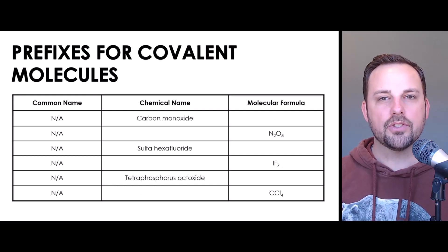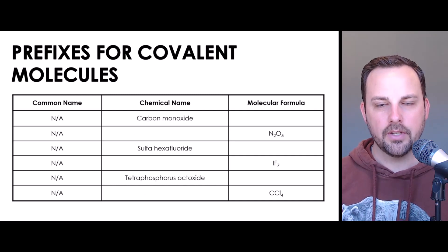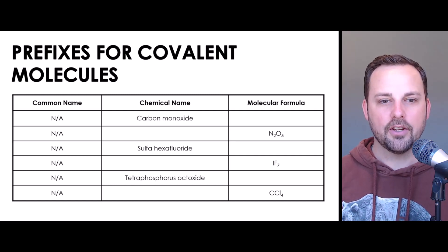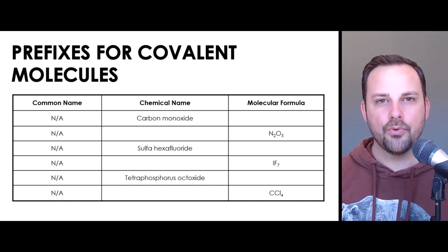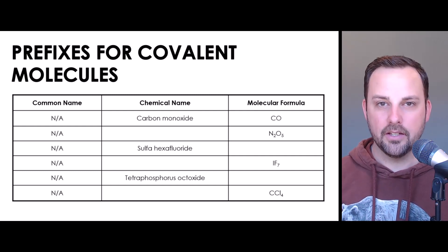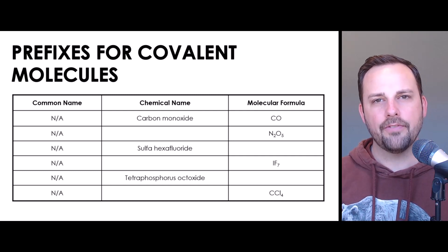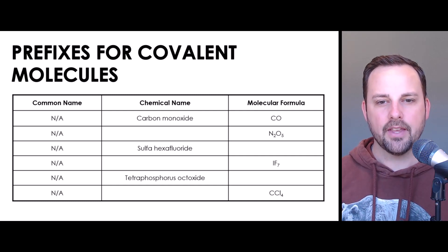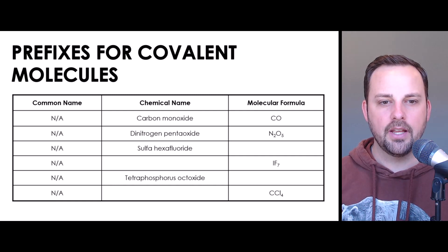Here's a challenge for you. I've given you several more chemical names and molecular formulas — try to pause this video and fill in the missing information on your own. Carbon monoxide: carbon is by itself without a prefix, so we know there's only one. Monoxide — the prefix mono also means one. So the molecular formula for carbon monoxide is CO. Now let's look at the molecular formula N2O5. N stands for nitrogen; two is represented with the prefix di. O stands for oxygen; there are five of those, so we give it the prefix penta. The chemical name for N2O5 is dinitrogen pentaoxide.